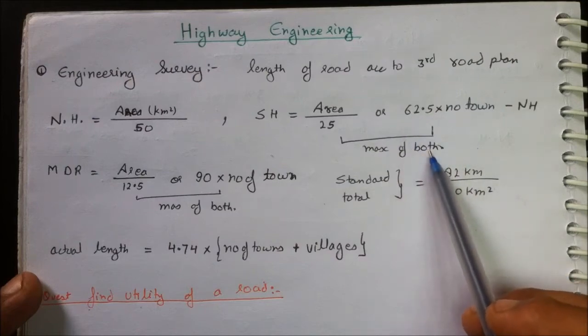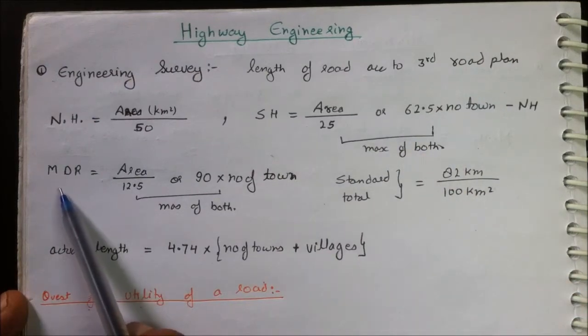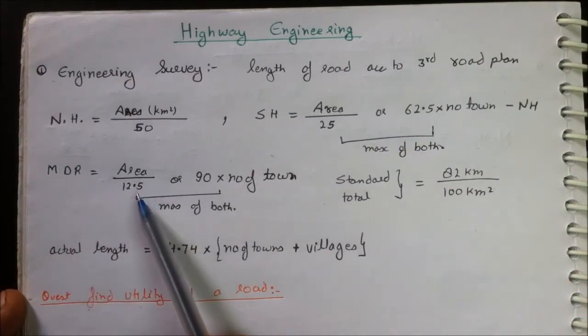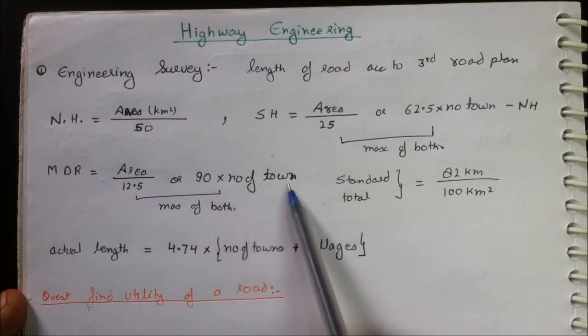Third one is Major District Road, in which Area divided by 12.5 is done, or 90 times the number of towns, in which maximum of both is taken. The final is the standard or total length, which should be 82 kilometers per 100 square kilometers of the area.